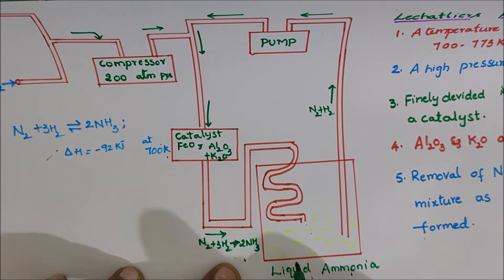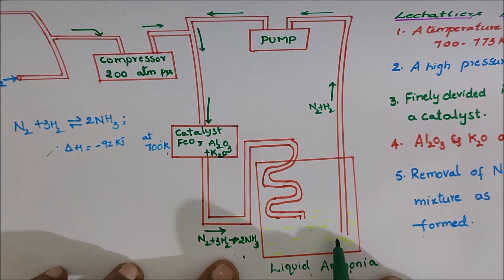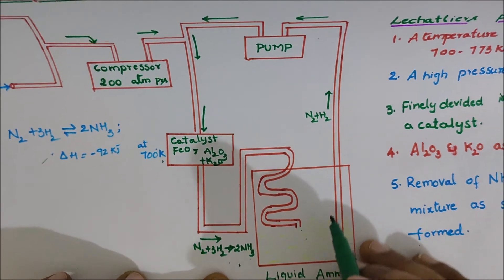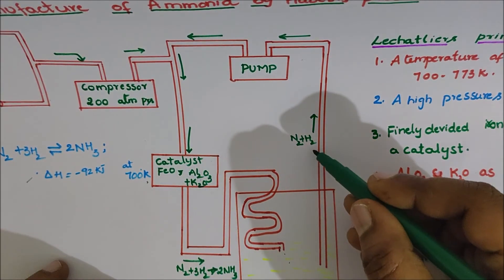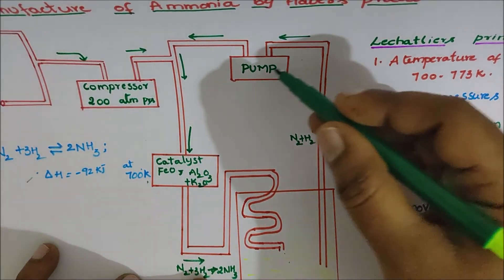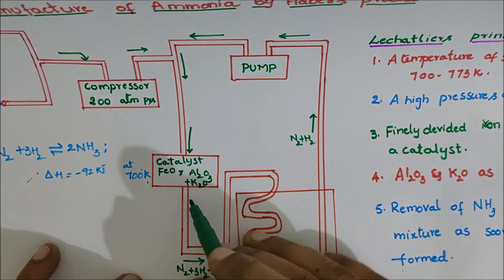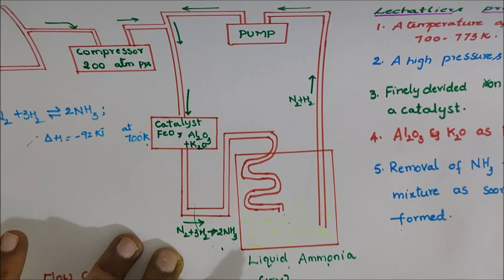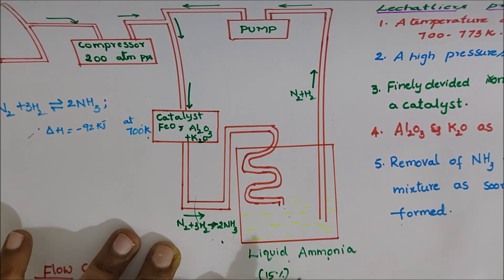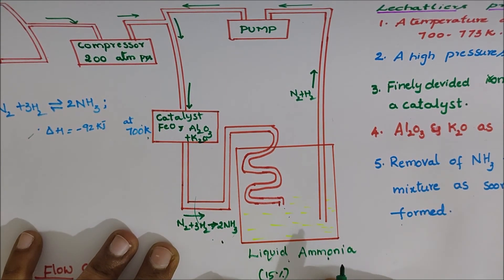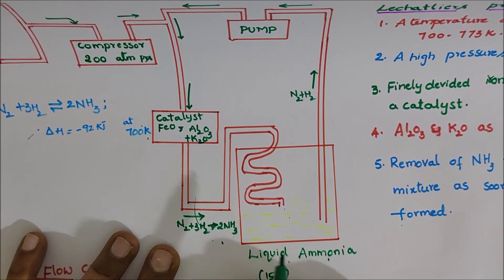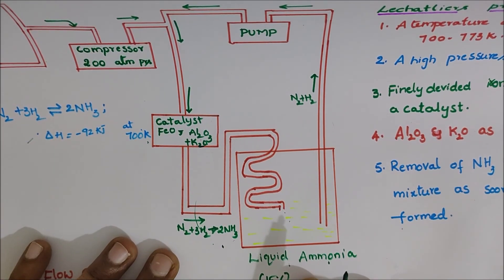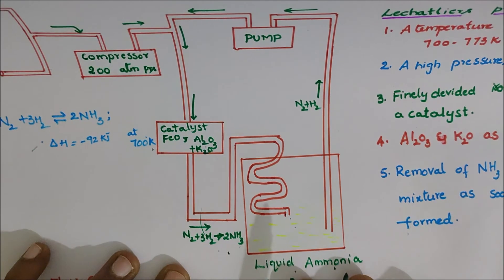The liquid ammonia is removed and the equilibrium gets disturbed, so nitrogen and hydrogen are passed through the pump and back into the catalytic chamber again and again, yielding more ammonia. This process is the manufacture of ammonia by Haber's process.